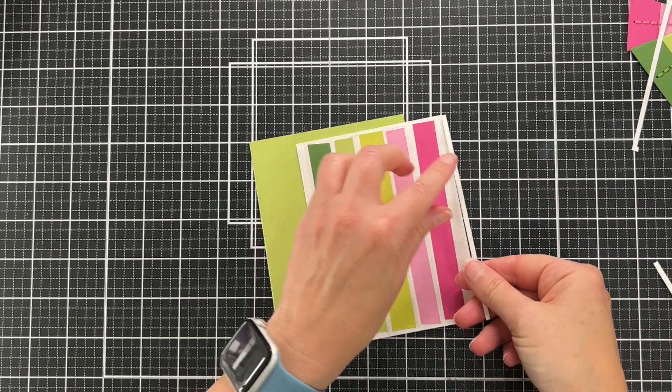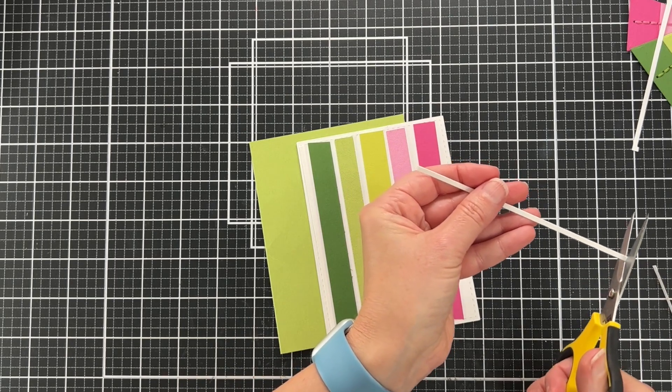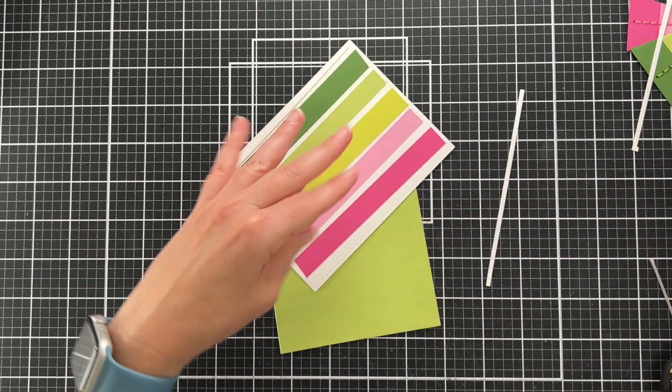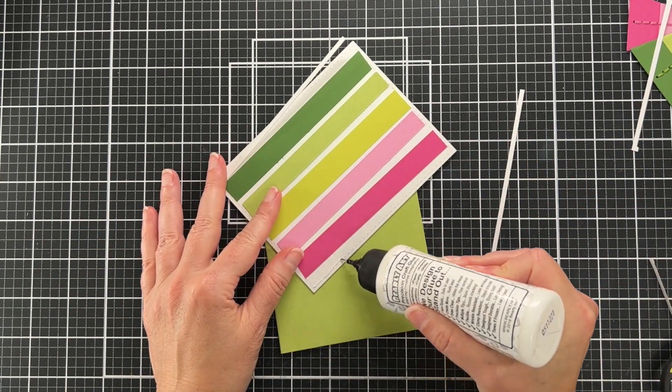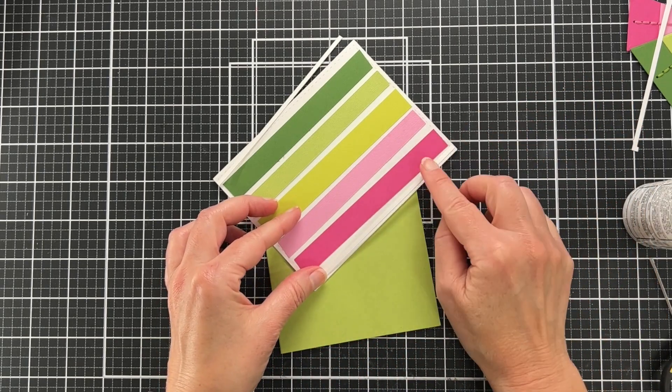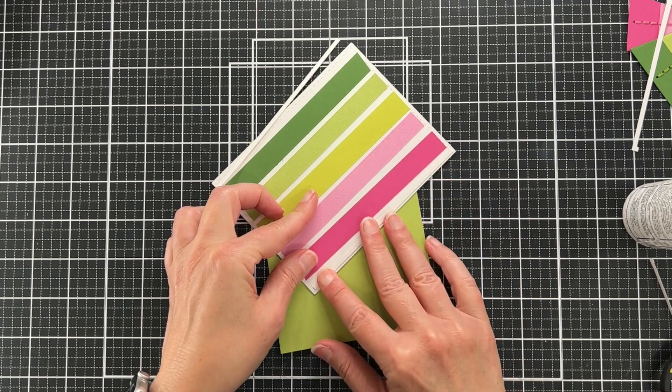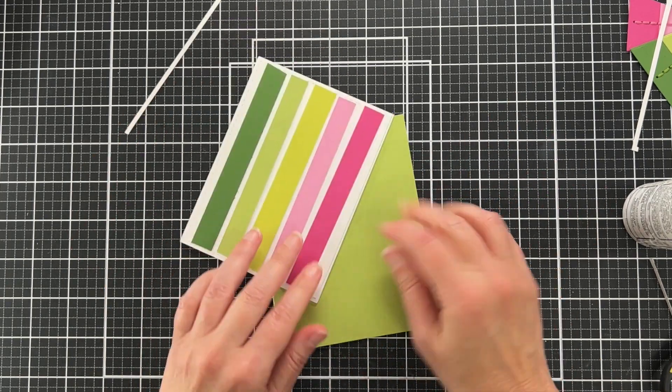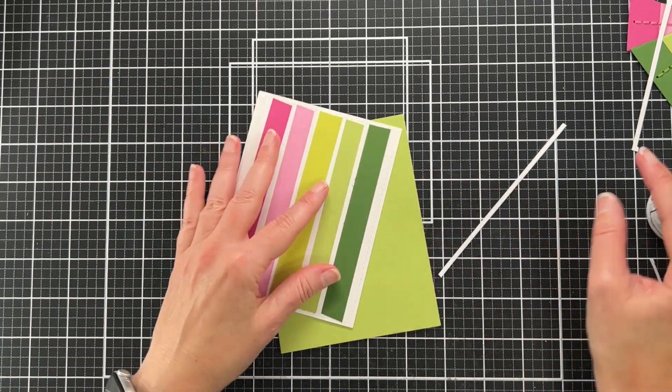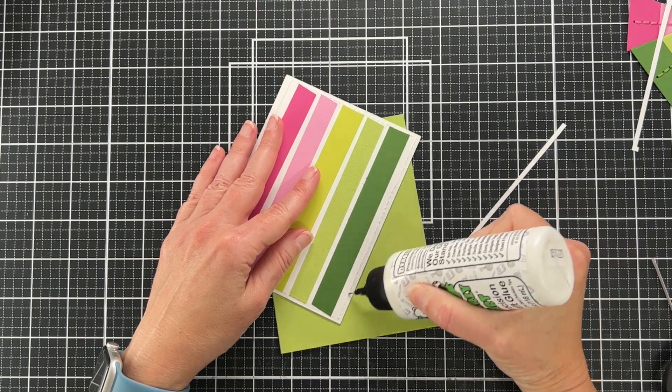These strips will then be kind of at the same level as the colored strips of paper, and so then I'll be able to glue this onto my panel and know that the sides are secure. I just prefer to have my edges nice and secure to the card.